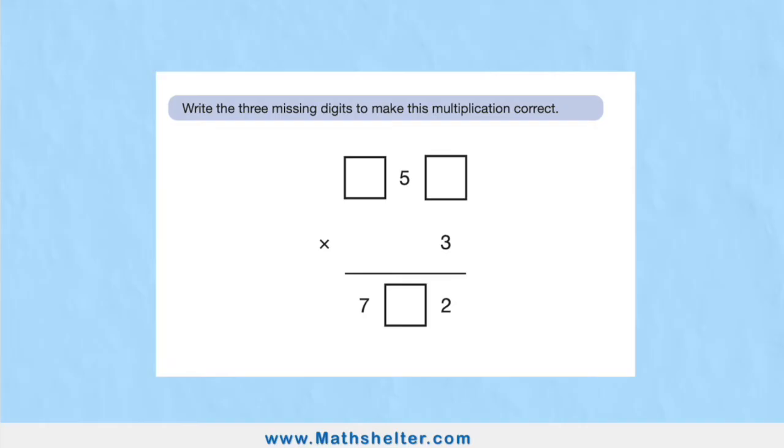Okay, question one, and this is becoming a really common question in SATs these days. This missing value multiplication or addition, any type of operation, but we have missing values and gaps in the question and the answer. So how are we going to solve a question like this? It says write the three missing digits to make this multiplication correct. So we have our answer down here. We know it's going to be 700 and something with a 2 in the ones column. And we have our question up here, 3 multiplied by something on this top row. So my question would actually be something 5 something multiplied by 3 equals 700 and something 2. So I'm looking for these three missing values.